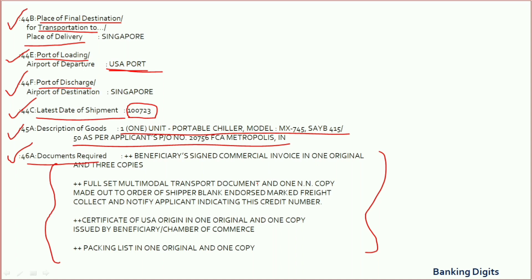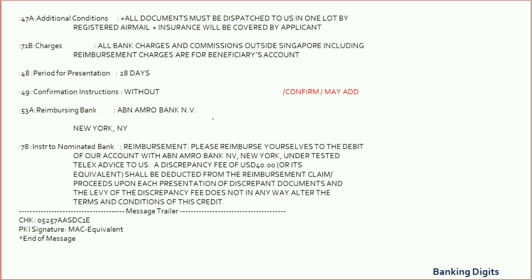Field 47A is where the issuing bank can mention any additional conditions — such as additional specifications about the document, type of goods, type of packaging, information about the interest rate for discounting, or any other confirmation instructions.